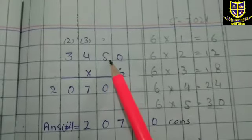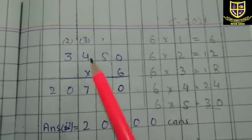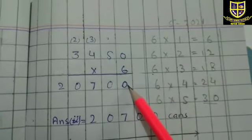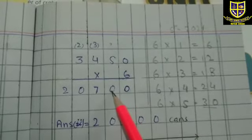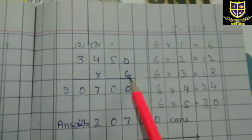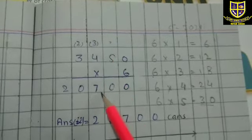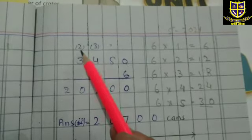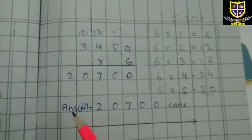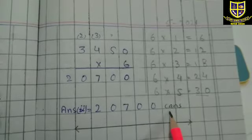Part two: 3450 total crates ہیں اور ہر crate میں six cans ہیں — اس number کو six سے multiply کریں گے۔ Six کا table پڑھنا ہے۔ Six times zero = zero۔ Six times five = 30 — zero لکھیں اور three اگلے column میں جائے گا۔ Six times four = 24، plus three = 27 — seven لکھیں اور two اگلے column میں۔ Six times three = 18، plus two = 20۔